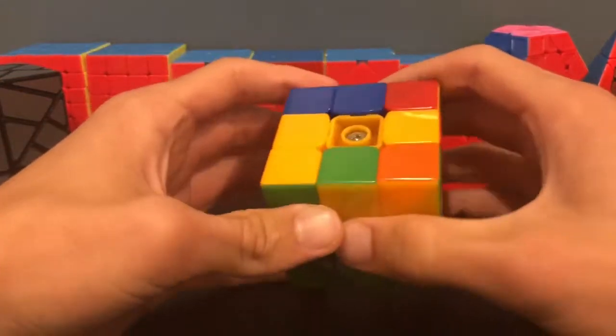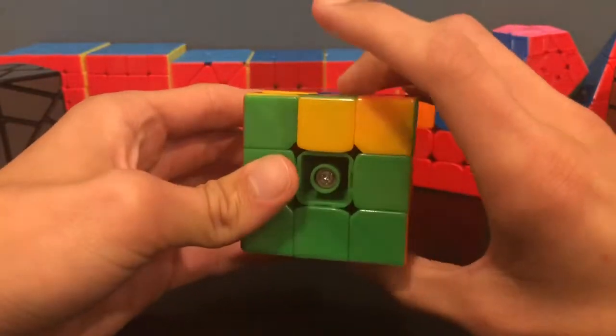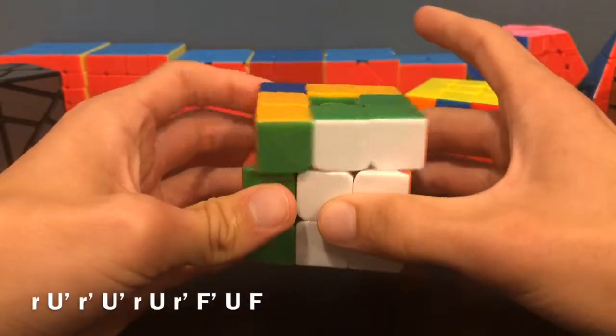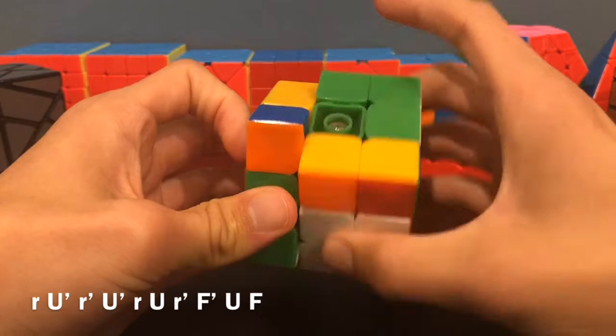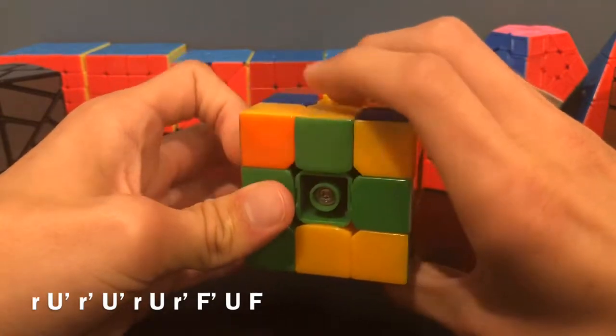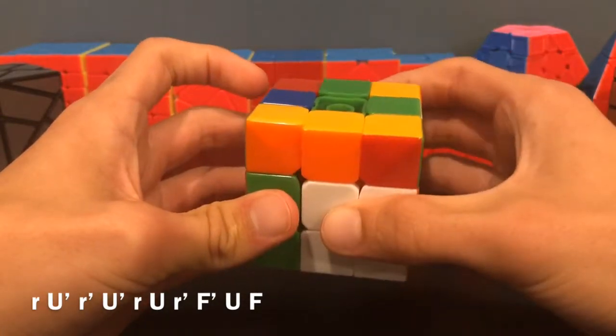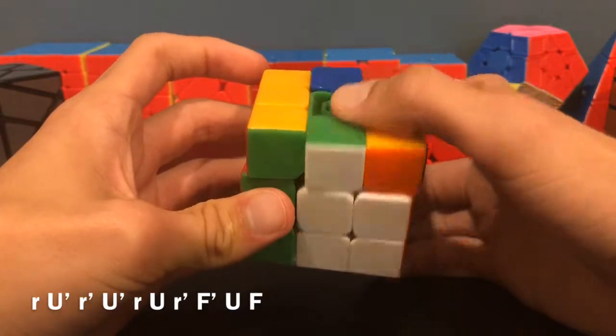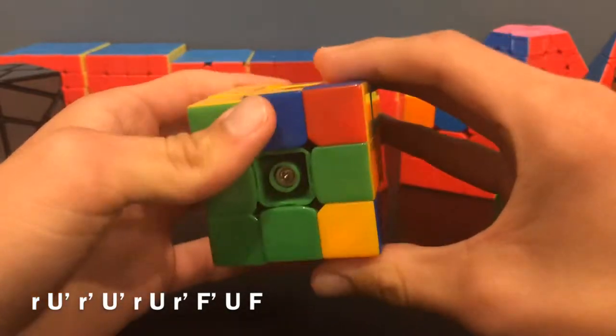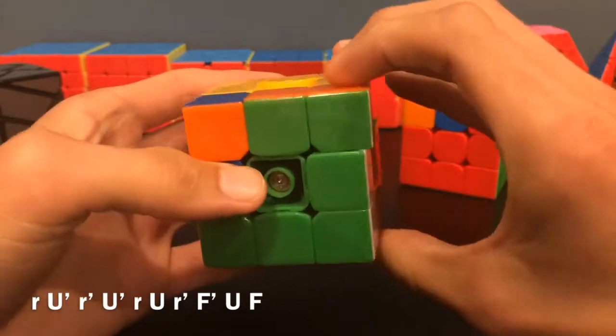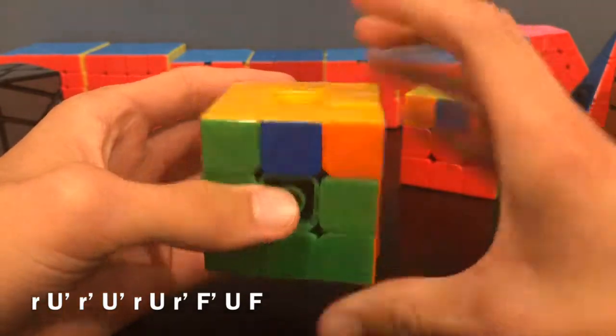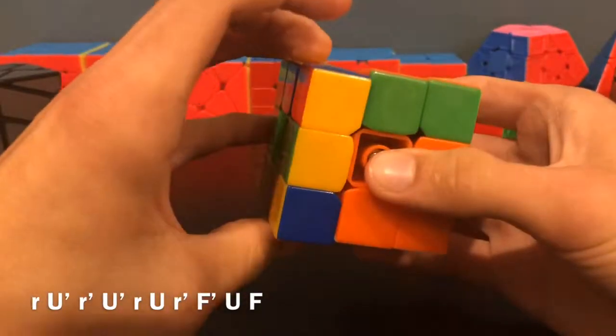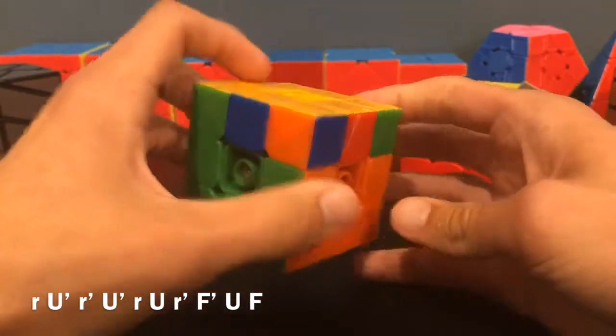For this one, you'll do a different algorithm even though it looks similar. So R wide U' R wide U' U' R wide U R wide prime, then F' U F. Also, I sort of just go like this for that last F2L pair.